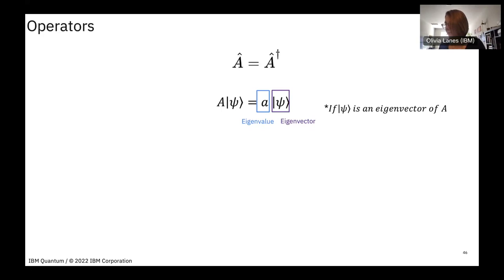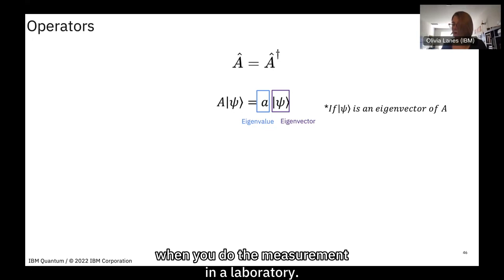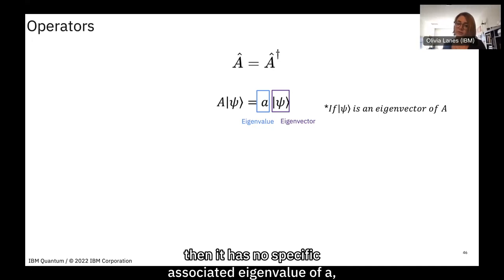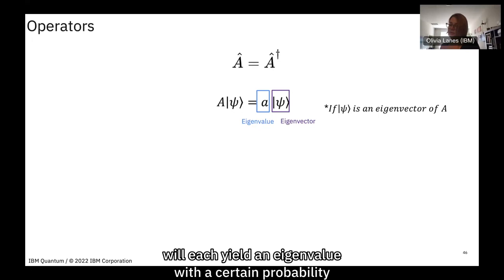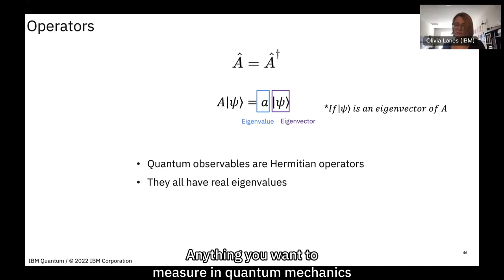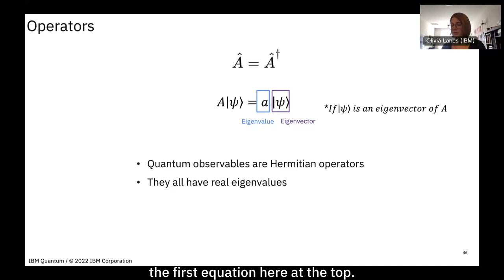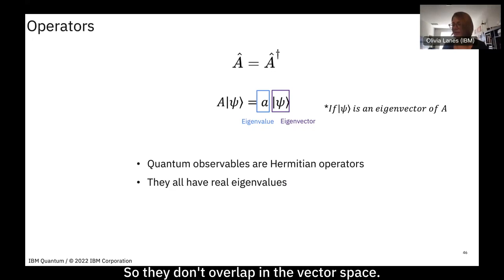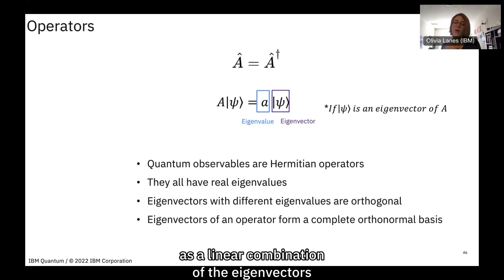The eigenvalue must be real and physically measurable. If |ψ⟩ is not an eigenfunction of Â, then it has no specific eigenvalue — instead, measurements yield each eigenvalue with a certain probability related to the decomposition of |ψ⟩ in the eigenbasis of Â. To summarize: anything you measure in quantum mechanics must be a real Hermitian operator with real orthogonal eigenvalues, and its eigenvectors form a complete basis so any state can be written as a linear combination of them.